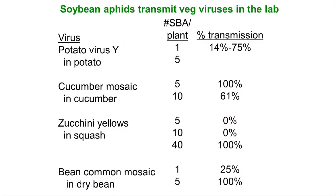We know in the laboratory that soybean aphids can spread potato virus Y in potato, as well as viruses in cucumber, squash, and dry beans. For these transmission tests: you have an infected plant, take a little brush, starve your aphids for an hour or so, put them on the plant for about a minute, then move them very carefully and leave them for a few minutes. That's enough to spread the virus. If you put 5 to 40 aphids, you can get almost 100% transmission of some of these viruses.